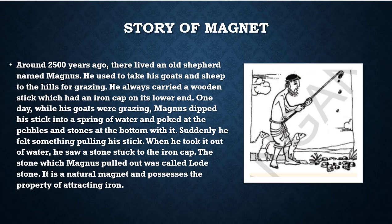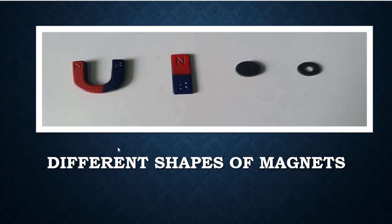Okay children, I want to show you some shapes of magnets. You are observing different shapes of magnets here. This is a horseshoe magnet, bar magnet, disc magnet, and ring magnet.